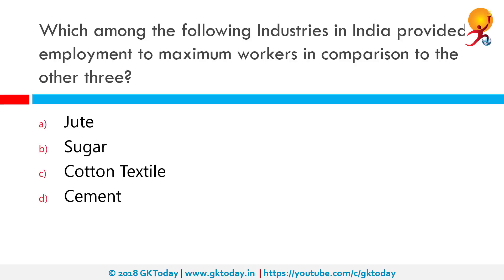Which among the following industries in India provides employment to the maximum number of workers compared to the other three? 60% of India's textile industry is cotton based. Among jute, sugar, cotton textile, and cement, cotton textile is the correct answer. Cotton textile accounts for the largest sector of textile production in India, with a share of 62% of India's total production and provides employment to about 4.8 million people.